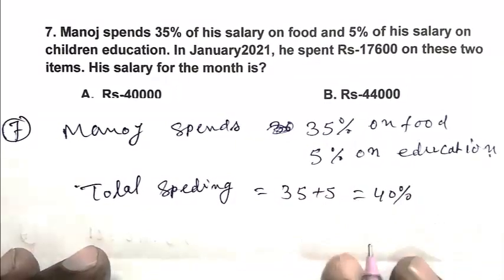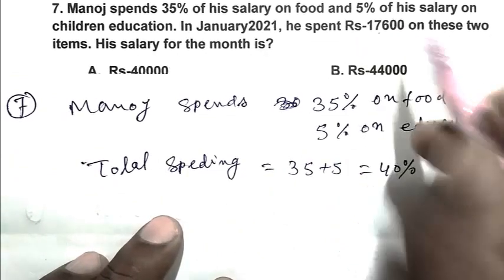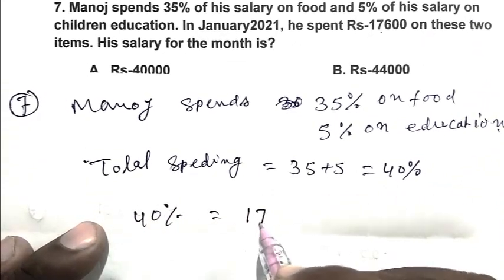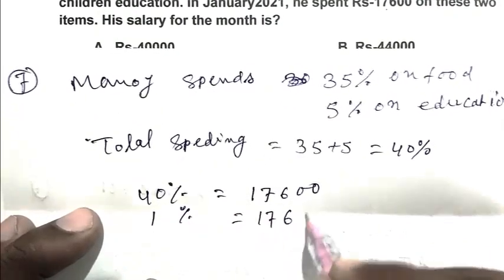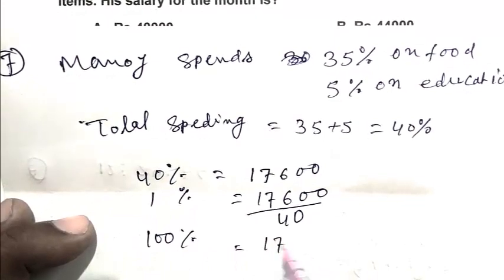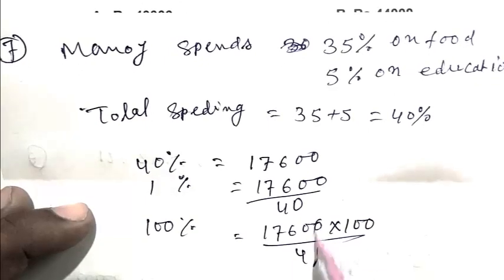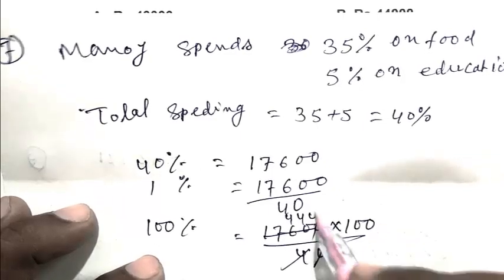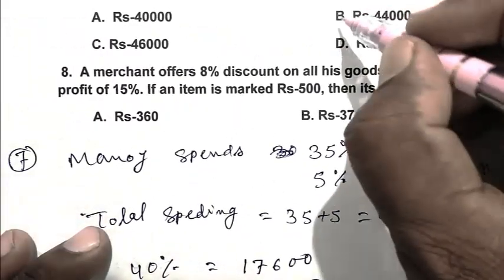And in rupees, total spending is 17,600. So according to question, 40% equals 17,600. Therefore 1% equals 17,600 upon 40, and total 100% equals 17,600 multiplied by 100 upon 40, which equals 44,000. So B is the right answer.